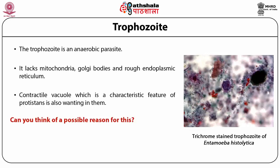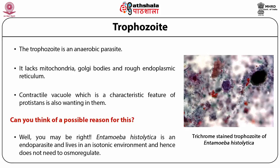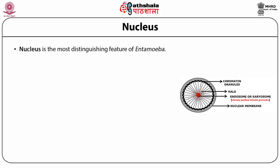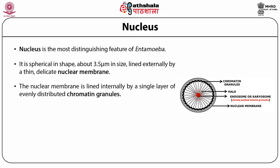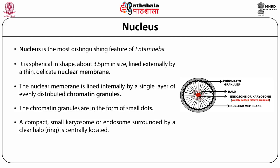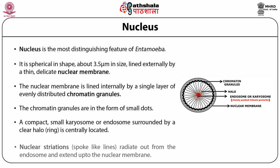Entamoeba histolytica is an endoparasite living in an isotonic environment and hence does not need to osmoregulate — which explains the absence of contractile vacuoles. The nucleus is the most distinguishing feature: spherical, about 3.5 µm in size, lined externally by a thin delicate nuclear membrane. The nuclear membrane is internally lined by a single layer of evenly distributed chromatin granules in the form of small dots. A compact small endosome, also known as karyosome, is surrounded by a clear halo and is centrally located. Nuclear striations, spoke-like lines, radiate from the endosome to the nuclear membrane.